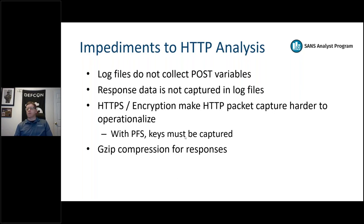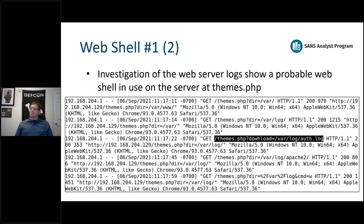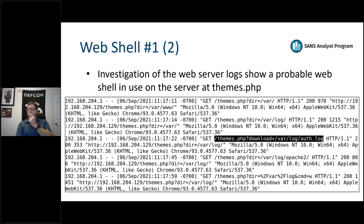Case Study 1: A simplistic web shell was found on the system and I need to identify more. Right off the bat this looks bad. There's a cat /etc/passwd - obviously concerning - but there's something specific here that makes me especially squeamish. Can anyone guess what it is?